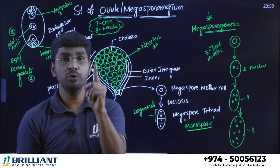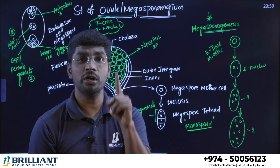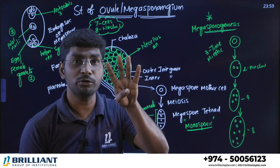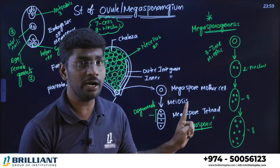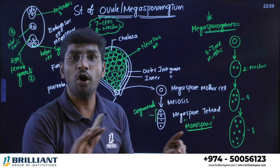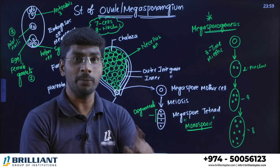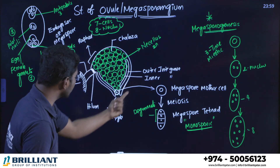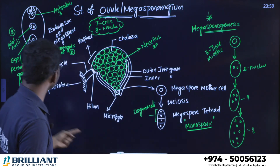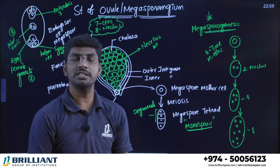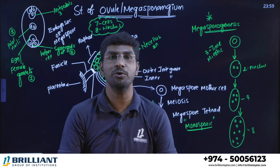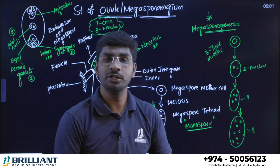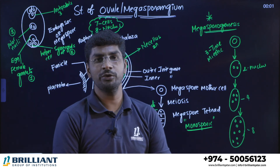To summarize: from one cell out of the four in the tetrad, one complete embryo sac forms. Not all four become a female gametophyte — only one cell becomes the embryo sac with seven cells and eight nuclei. This entire process is called megasporogenesis — the formation of megaspores inside the megasporangium. Please revise this video and prepare for your examination. Thank you.